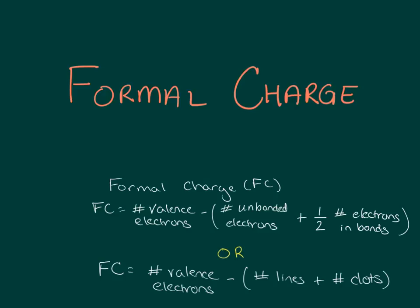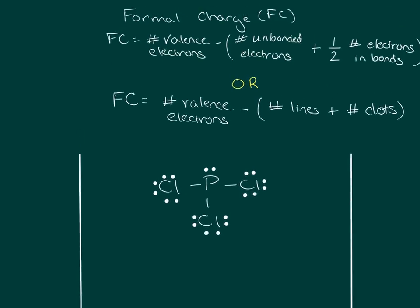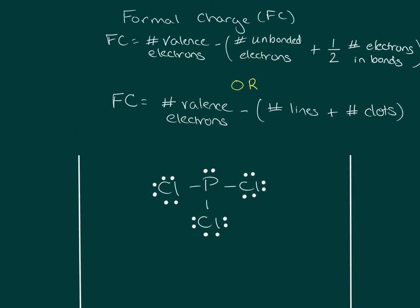I have three different molecules for examples of how to calculate formal charge. The first is PCl3, and you calculate formal charge on the atoms individually. For phosphorus: formal charge on P equals the number of valence electrons, which is five from the periodic table, minus the number of unbonded electrons — phosphorus has two unbonded electrons — so that's two, plus one-half of the number of electrons in bonds around phosphorus.